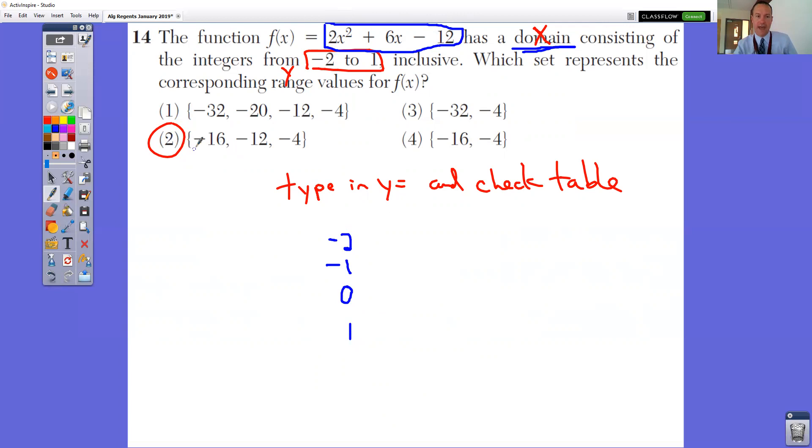Well, when you go and do that, you get these as your y values when you go and check the table. Negative 16, negative 12, and negative 4.